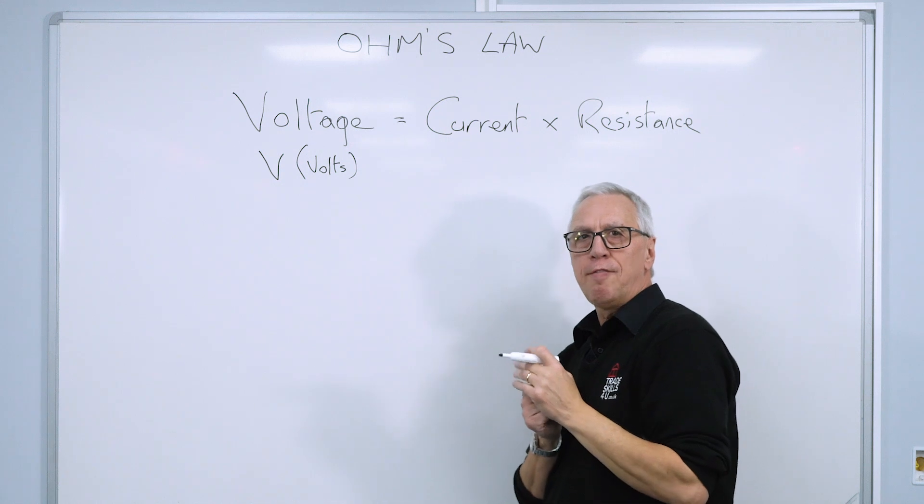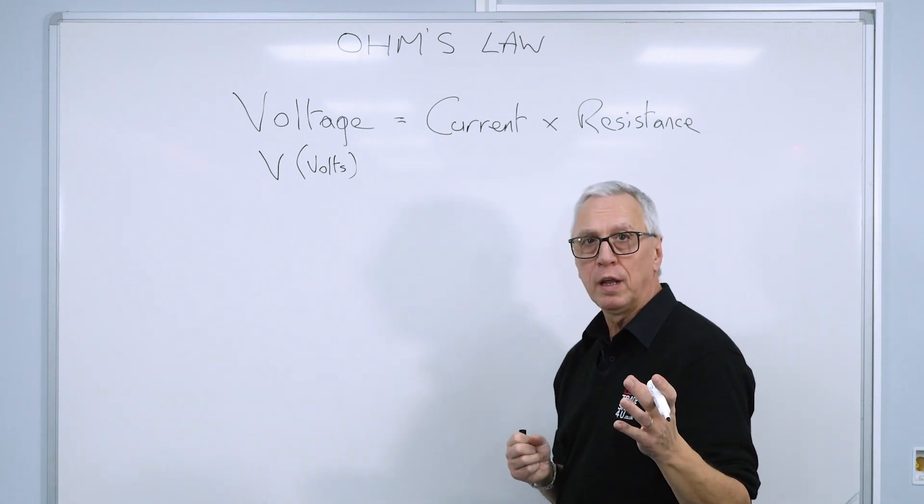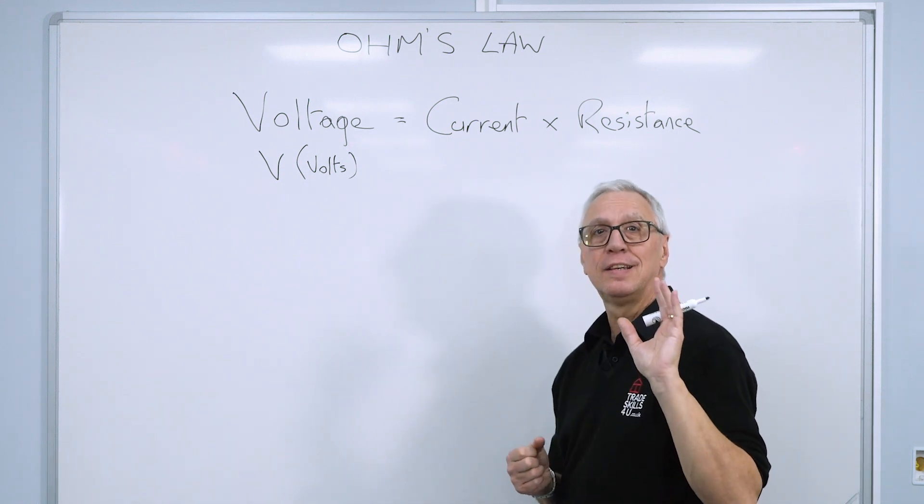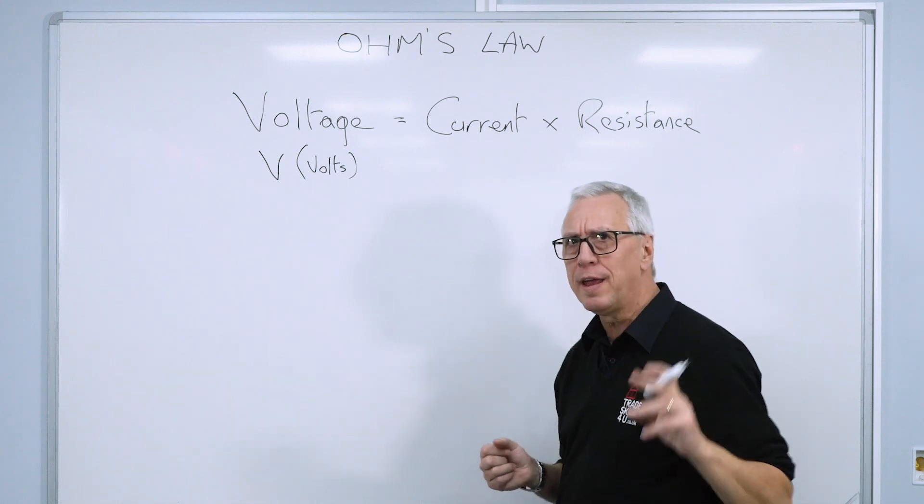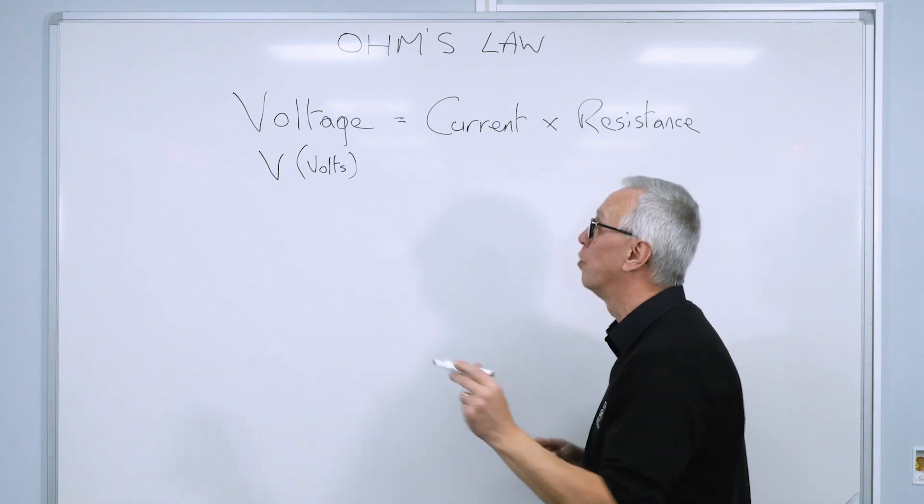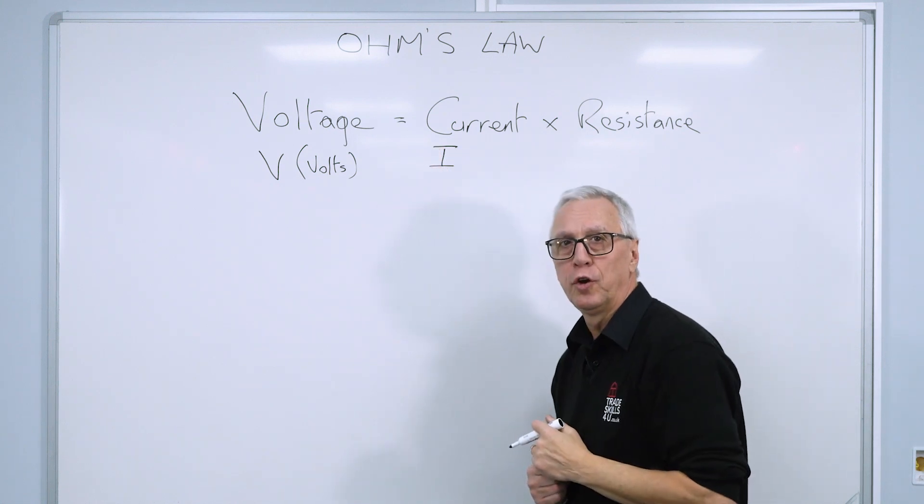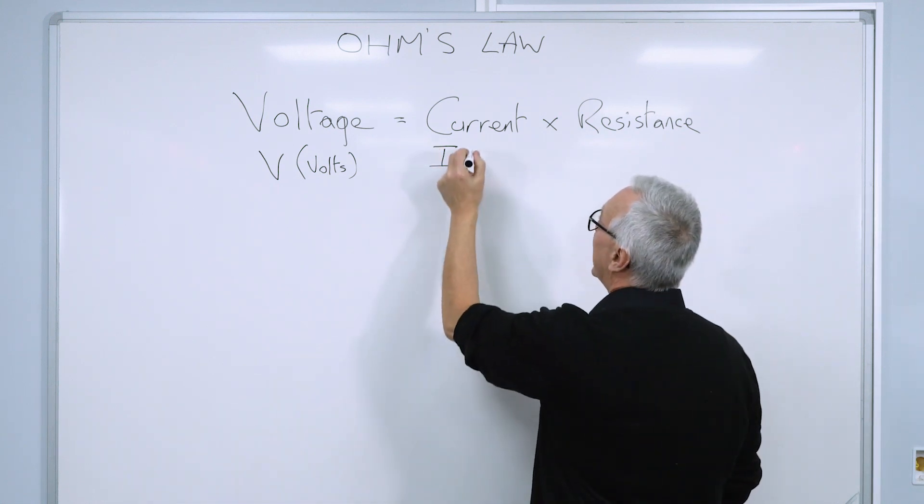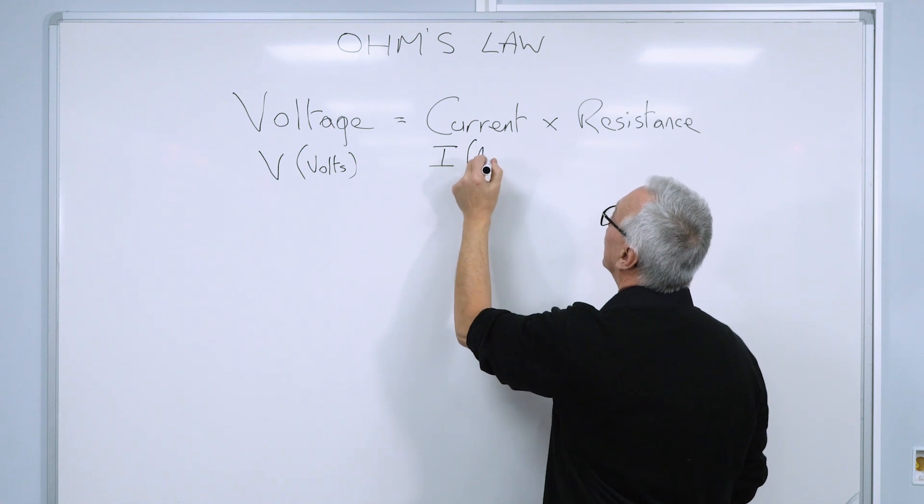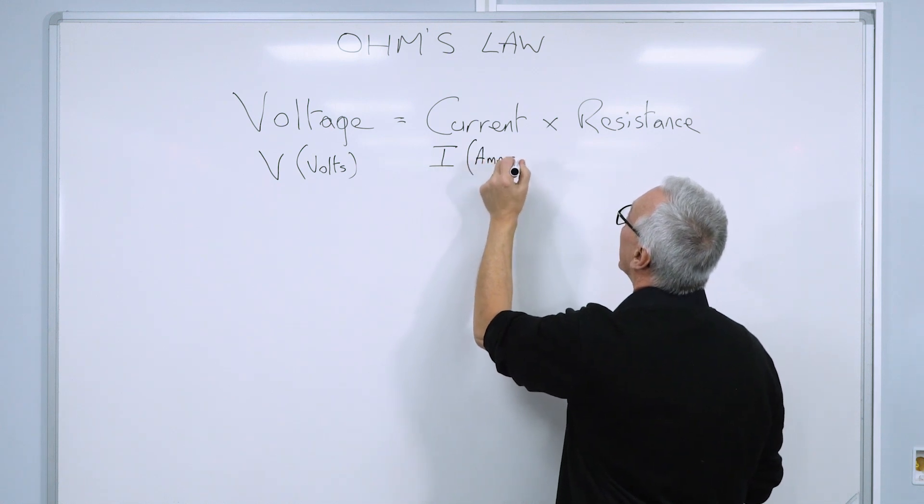Current, in a formula and in the wiring regulations, is actually given the letter I. So you'll see I everywhere, and that's the symbol for current. But the unit of electrical current, as many of you probably know, is the ampere. And we shorten that down to amps.